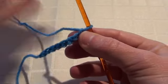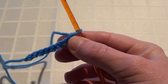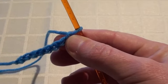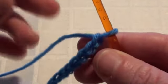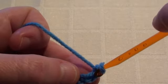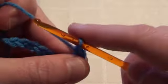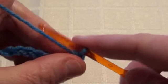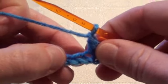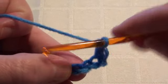And for row one, we're doing a single crochet into the second chain from the hook. Then we're going to chain one. We're going to skip one chain and do a single crochet into the next.